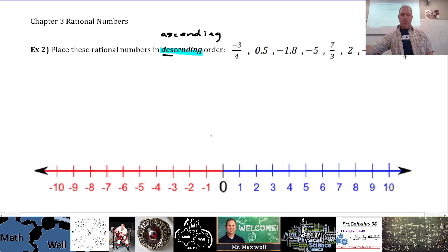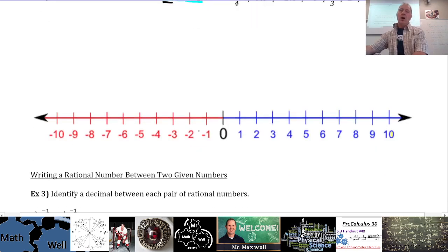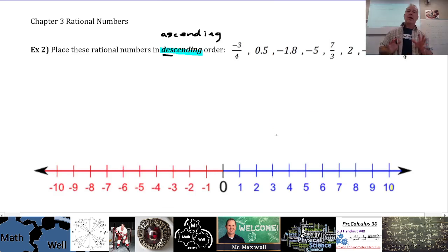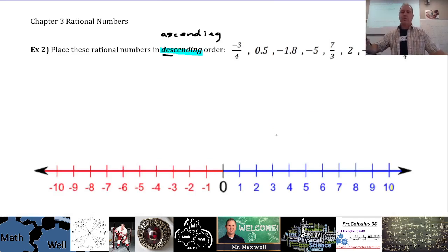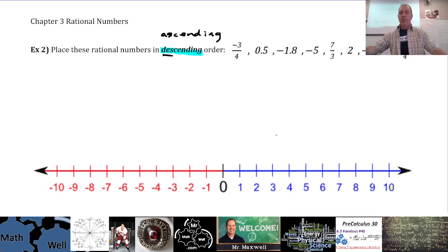Now, descending order — place these rational numbers in descending order. There's a number line to help you visualize where they might be, but we need to list them from greatest to smallest. From left to right on the number line would be smallest to greatest, so we don't just leave them on the number line. We have a mix of different kinds of numbers: fractions, decimals, repeating numbers, mixed fractions, positives, negatives, whole numbers — we have everything.